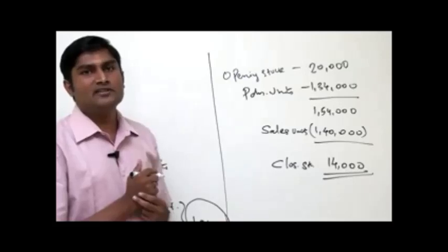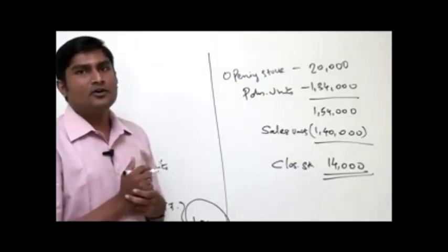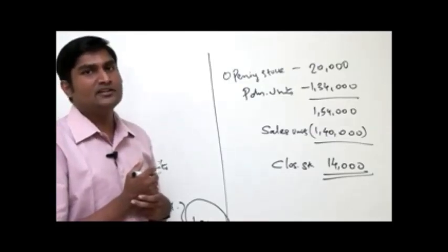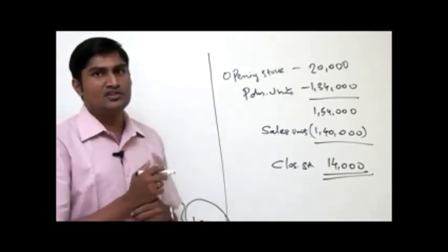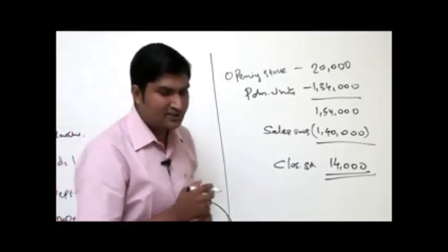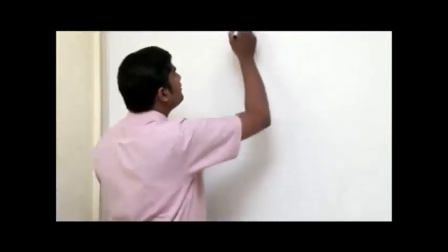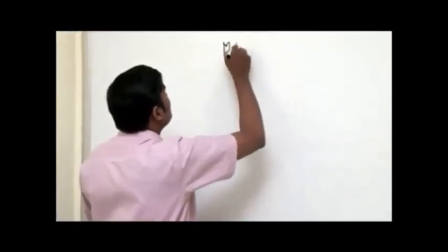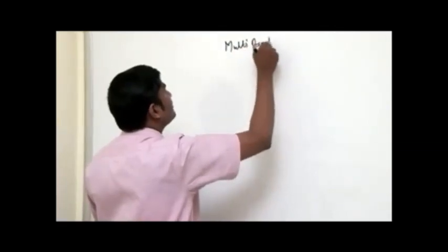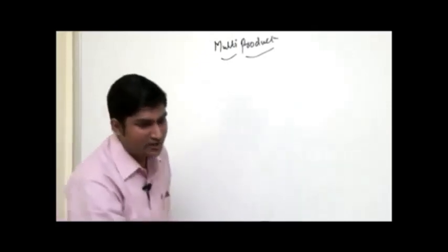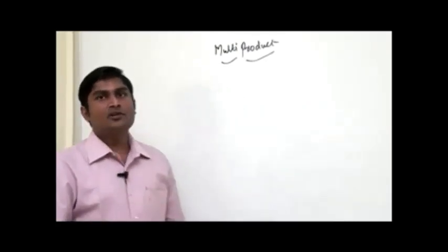We were discussing how to find out the principal budgeting factor in single product producing concerns. We illustrated this through three illustrations. Now let us analyze how to find out the principal budgeting factor in the case of multi-product organizations, where there will be more than one product.